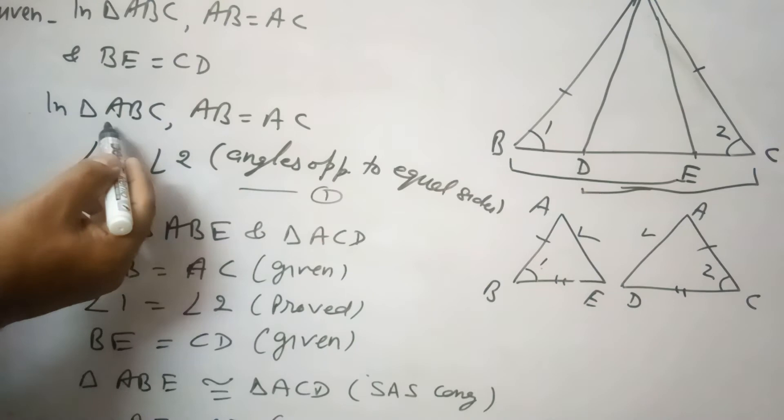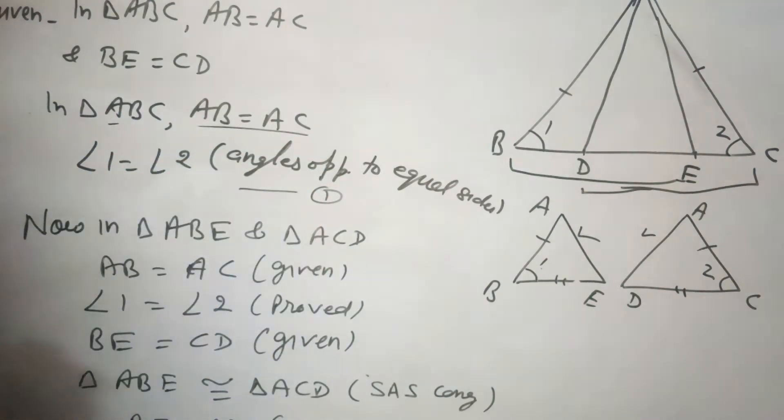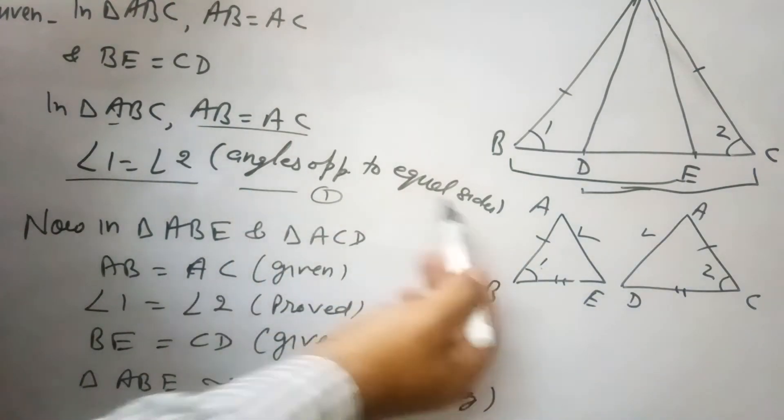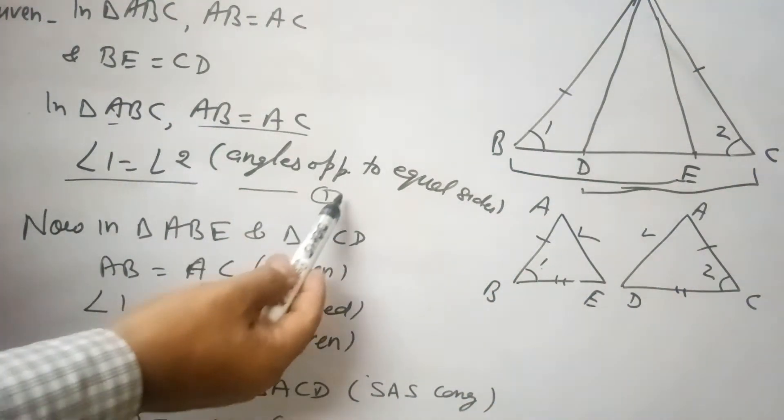Now, because ABC is an isosceles triangle, AB equals AC, so angle 1 equals angle 2. Angles opposite equal sides. So let this be equation 1.